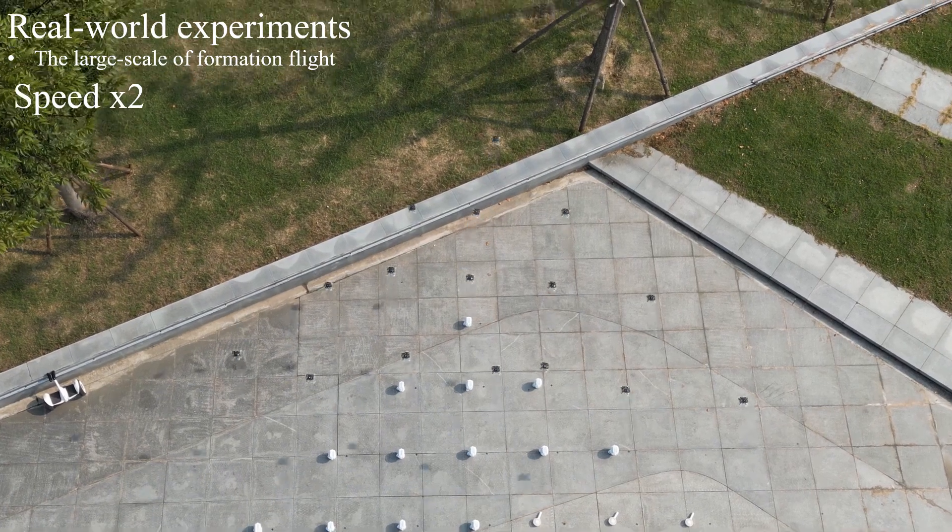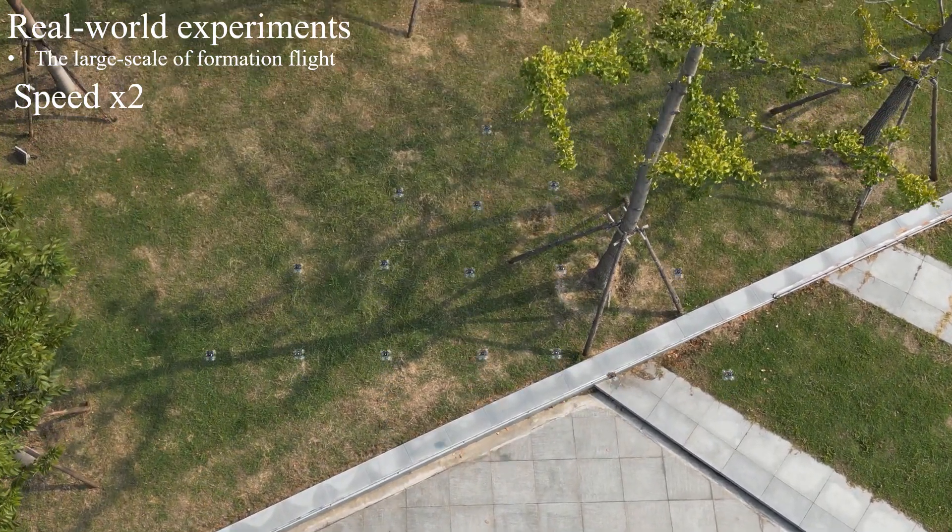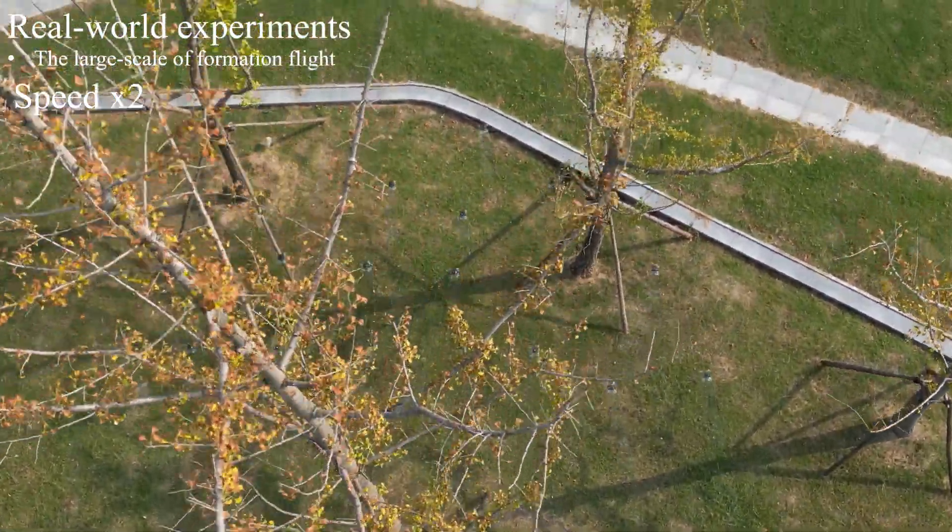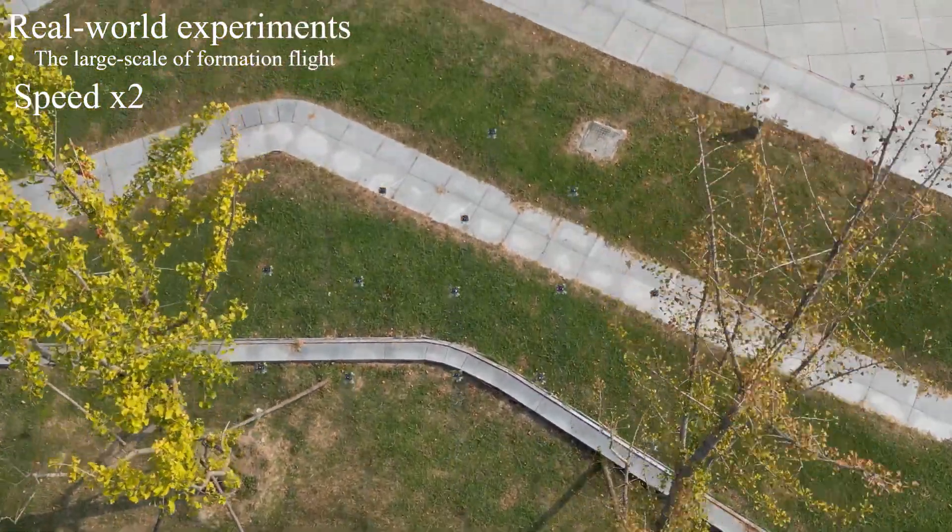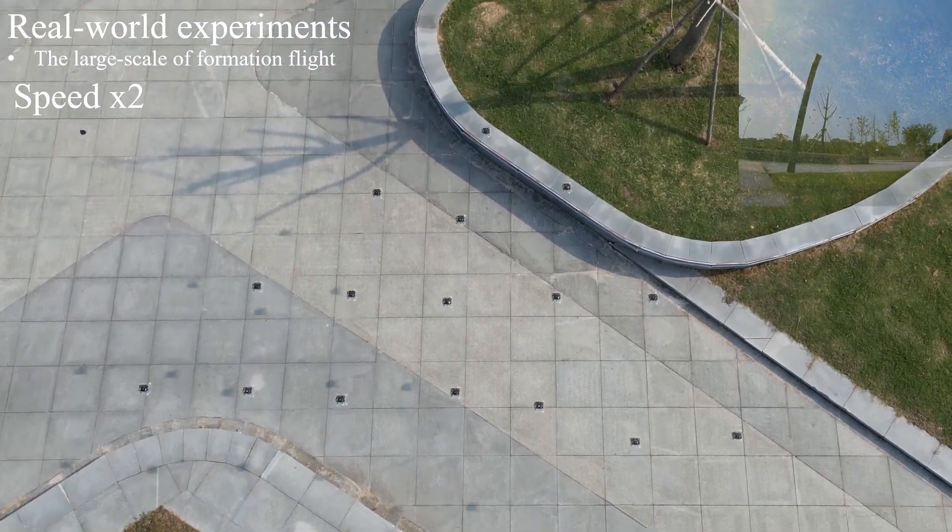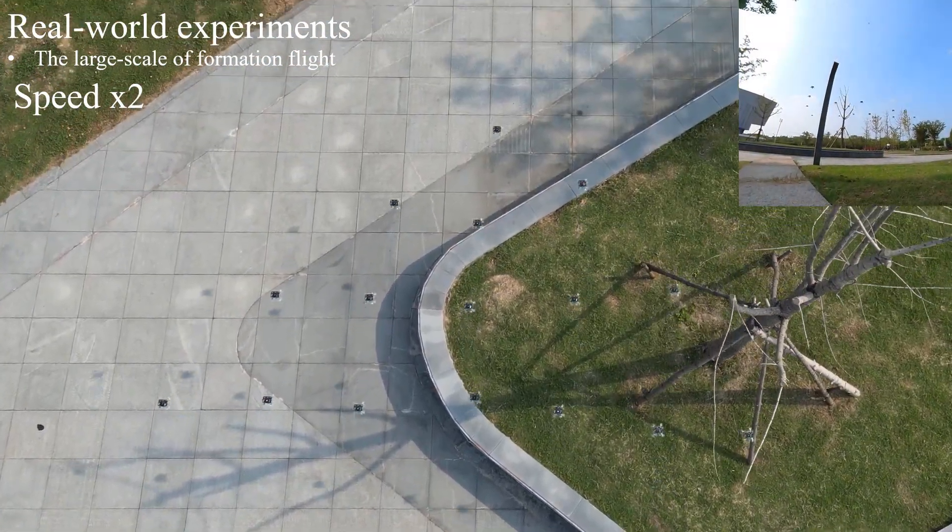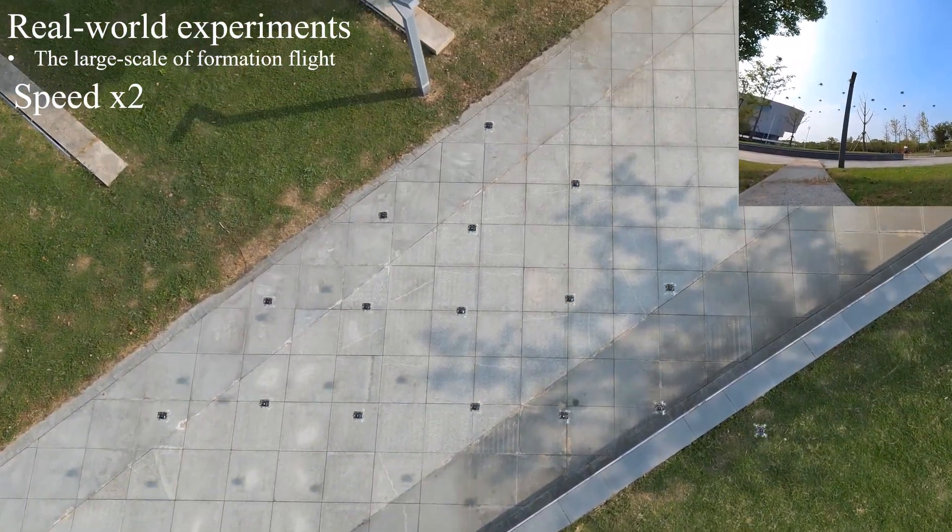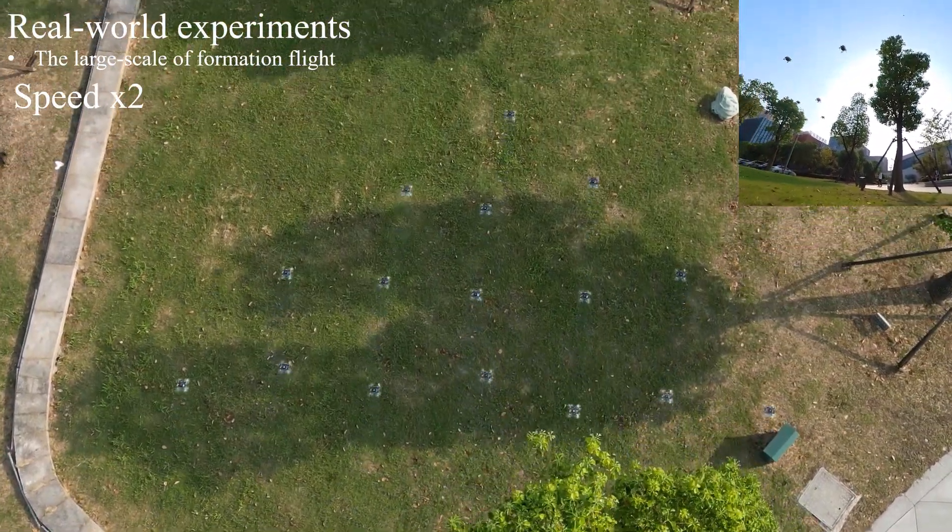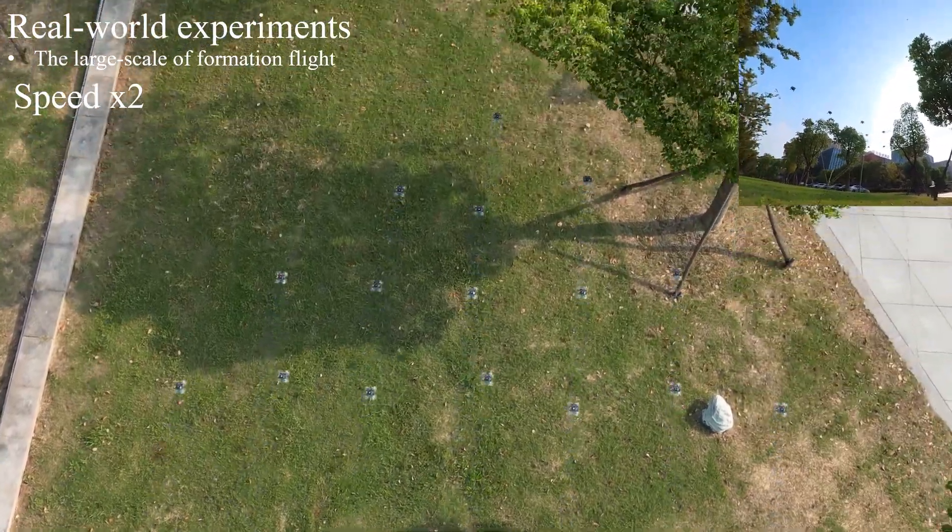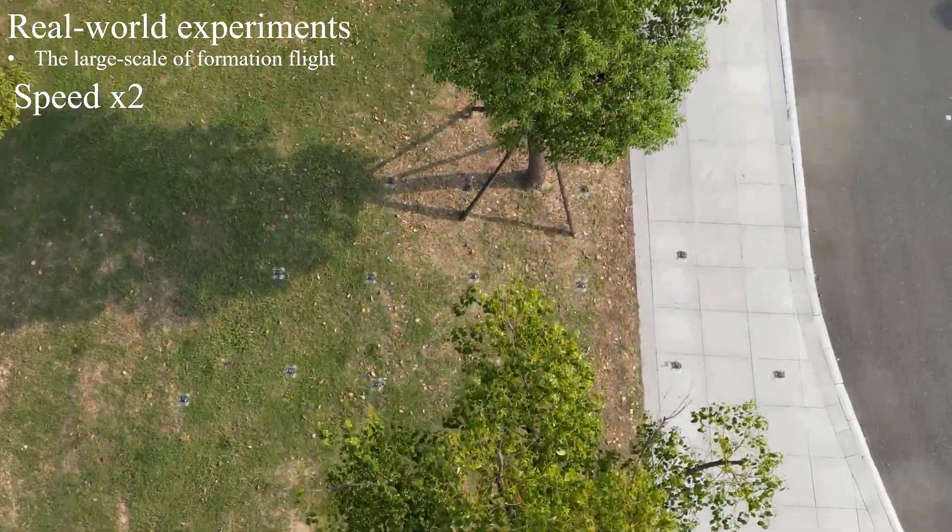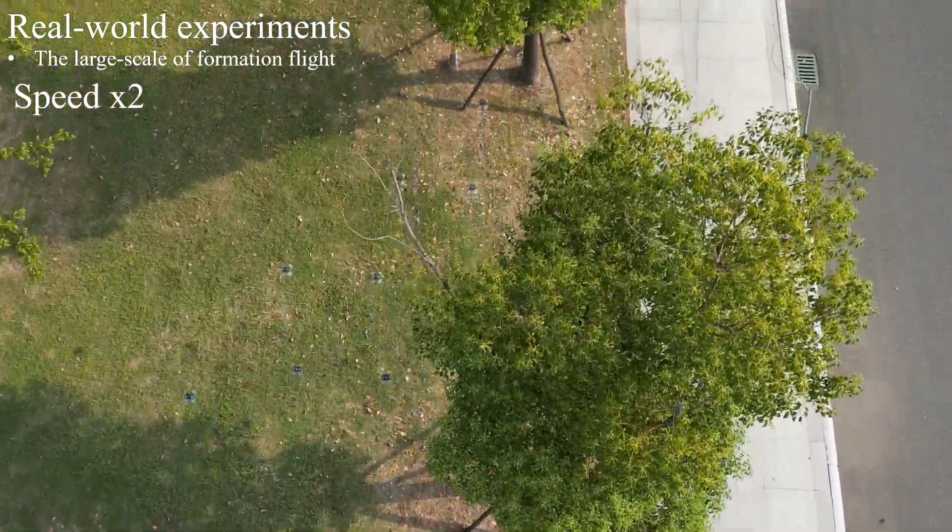In the first real-world experiment, we conduct a 16-drone swarm formation flight experiment outdoors. To the best of our knowledge, this is the largest fully autonomous formation flight experiment in a complex outdoor environment. As shown in the video, 16 drones form a triangular Q shape and successfully traverse an obstacle-rich area without any collision. There are many street trees, stakes, and street lamps in this area. This experiment proves the robustness and large-scale ability of our proposed method.